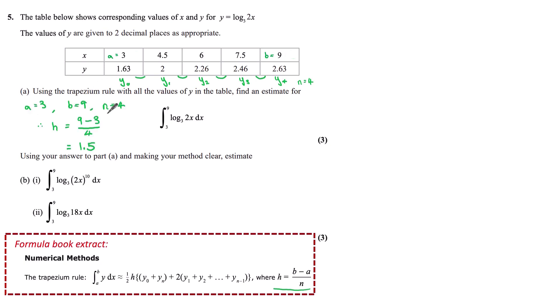So with a equals 3, b equals 9, and n equals 4, our height is equal to 9 take away 3 over 4, which gives us a value of 1.5. This can also be seen in the interval of the x values in our table.